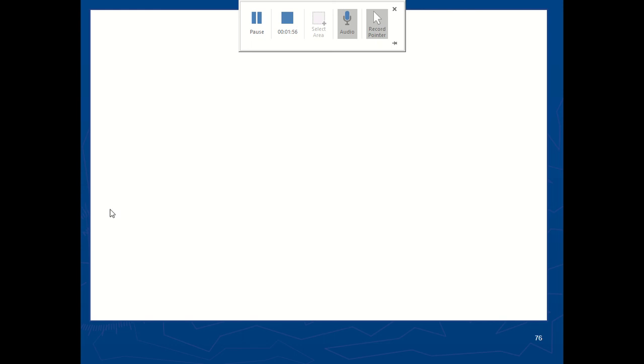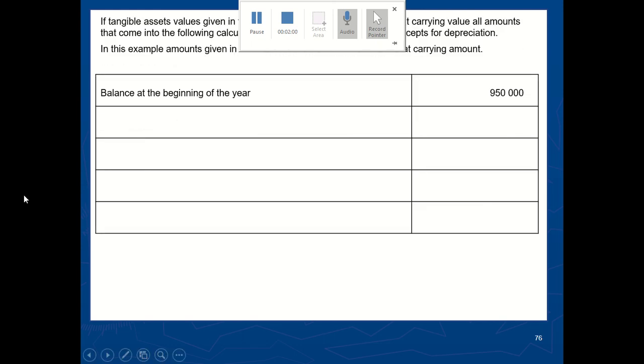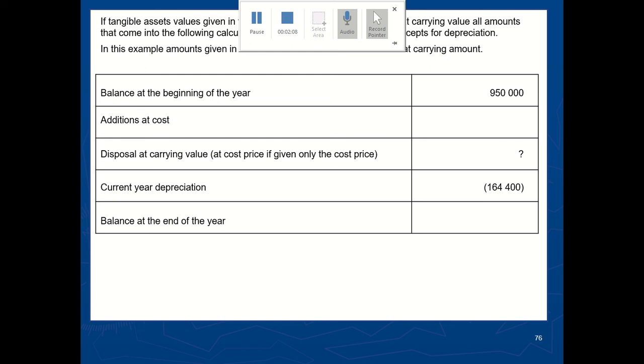So I said we start with the carrying value at the beginning of the year. Carrying value at the beginning of the year will simply be nine hundred and fifty thousand. We didn't have additions. We didn't have disposals at carrying value. We had current year depreciation. We also had balance at the end of the year. I did show you how we calculated that eighty three thousand rand and I showed you how we calculated additions at cost.